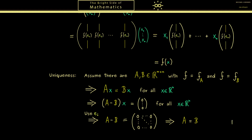The proof is finished. The important result to remember is that we can translate between a matrix and a linear map, and most importantly we can do it in both ways. Why this is so useful we will see in the next video. Have a nice day and bye!